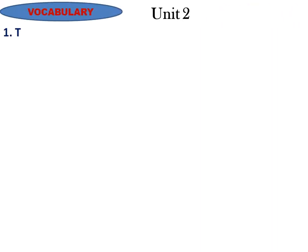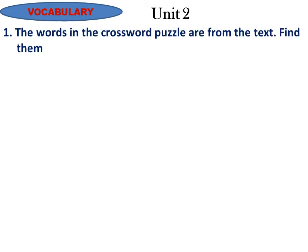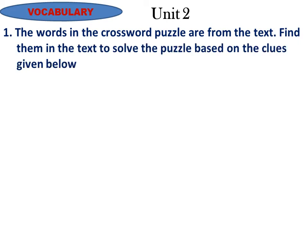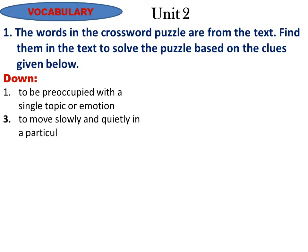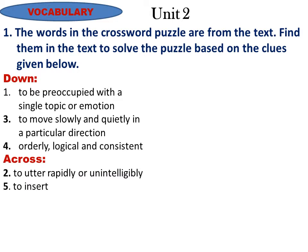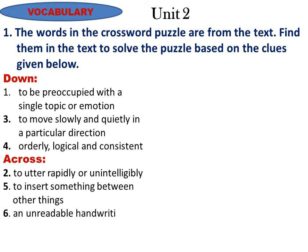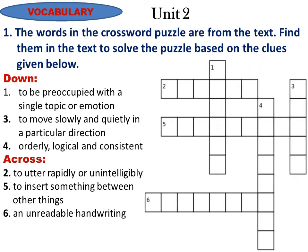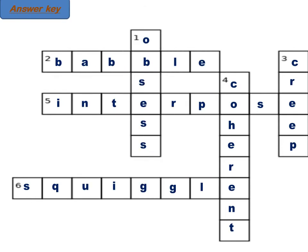Unit Two Vocabulary. Question One: The words in the crossword puzzle are from the text — find them in the text to solve the puzzle based on the clues given. Down: 2: To be preoccupied with a single topic or emotion. 3: To move slowly and quietly in a particular direction. Across: 4: Orderly, logical and consistent. 1: To utter rapidly or unintelligibly. 5: To insert something between other things. 6: An unreadable handwriting. Answers: 2 — 'obsess', 3 — 'creep', 4 — 'coherent', 1 — 'babble', 5 — 'interpose', 6 — 'squiggle' (spelling: S-Q-U-I-G-G-L-E).